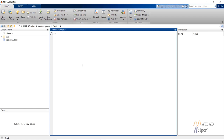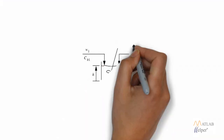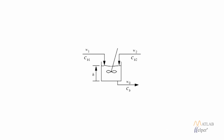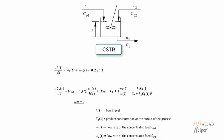Coming back to MATLAB, type `rctcsdr` in the command window and press Enter. This will open up the Simulink model which makes use of the NN predictive controller. The plant is basically a set of equations that represents the dynamic model of our system. As seen in the figure, we are using a continuous stirred tank reactor, or CSTR. The first equation represents the rate of change of the height of the model, and W1(T) is the flow rate of the concentrated feed CB1.